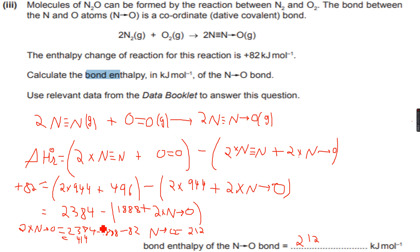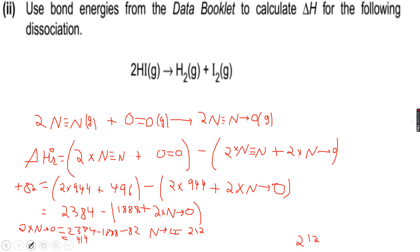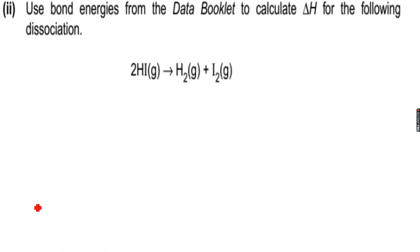Now we have another question for this. Use bond energies from the data booklet to calculate delta H for the following dissociation. This is actually very easy. 2HI gives H₂ plus I₂.